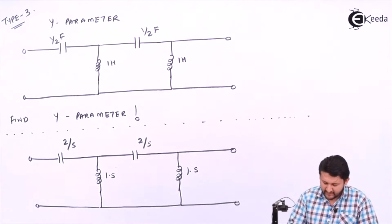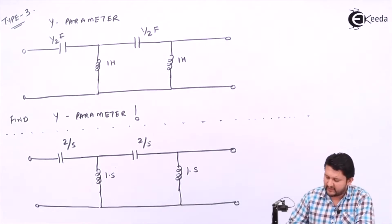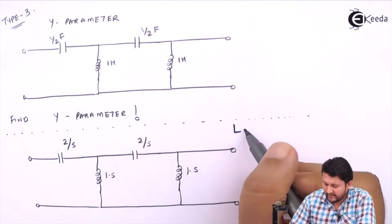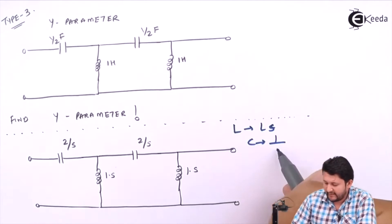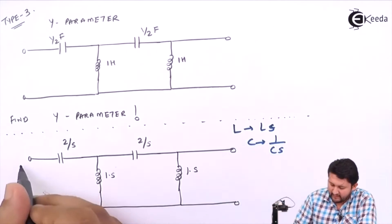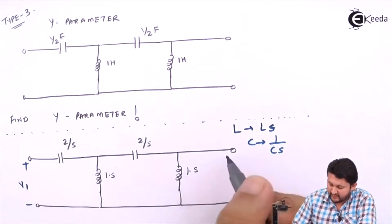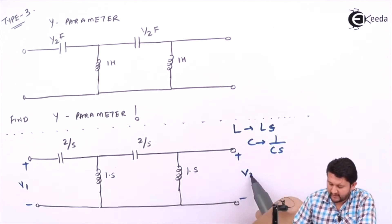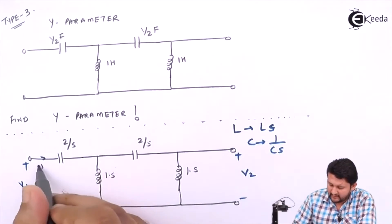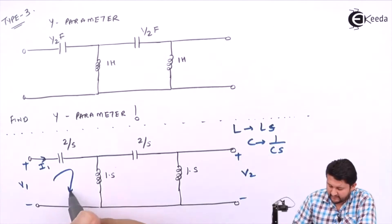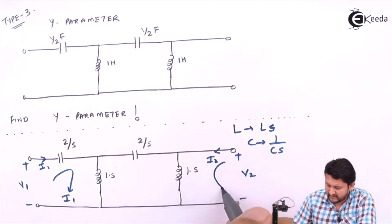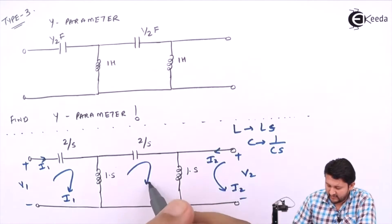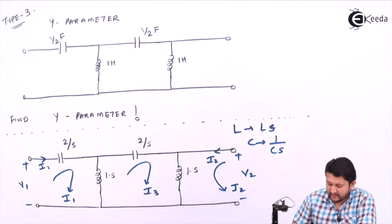First, I need to convert everything to the s-domain. L becomes sL, and C becomes 1 upon sC. We have input voltage V1, output voltage V2, input current I1, and output current I2. After converting everything, let's apply KCL.